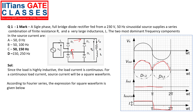According to the Fourier series, the expression for the square waveform is: i_source = Σ (n=1,3,5,...) [4I / (nπ)] sin(nωt), where I is the peak value. From this expression it is clear that we have only odd harmonics: 1, 3, 5, and so on. They are asking for the most dominant frequency components, so the two most dominant are the 1st and 3rd harmonics, that is 50 Hz and 150 Hz.